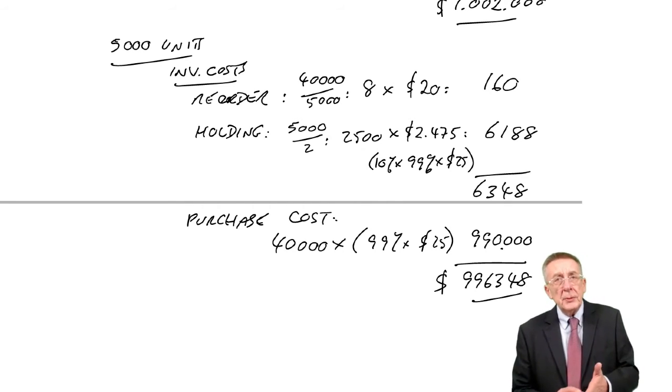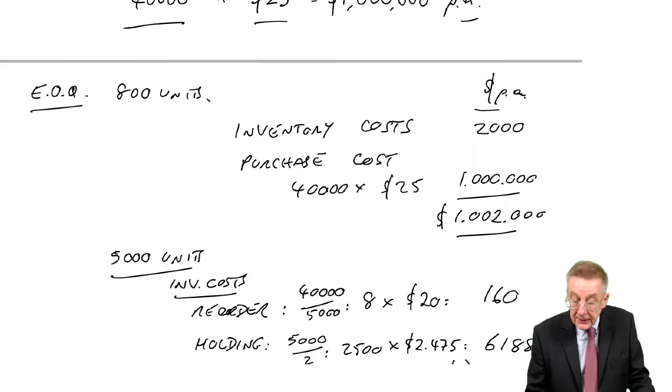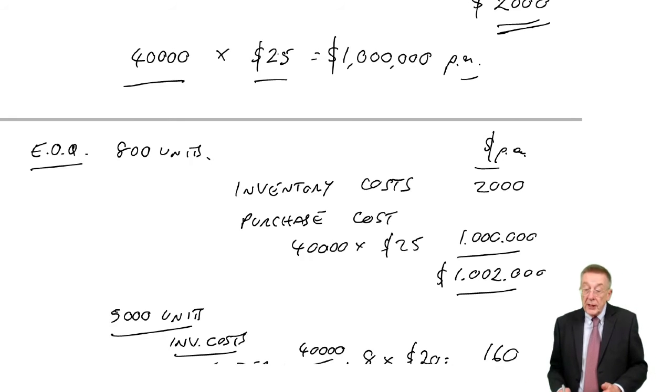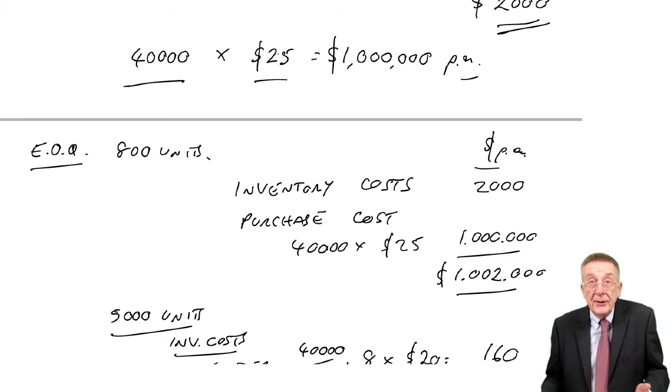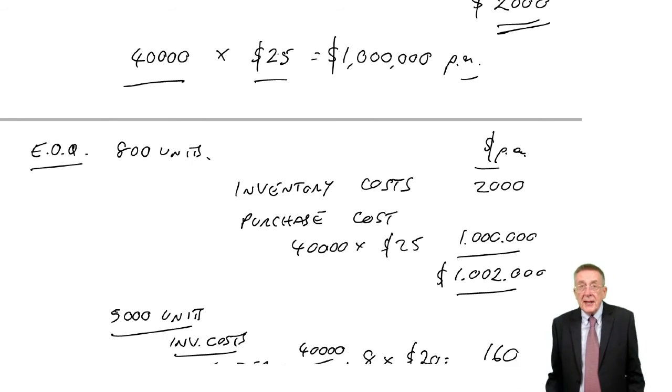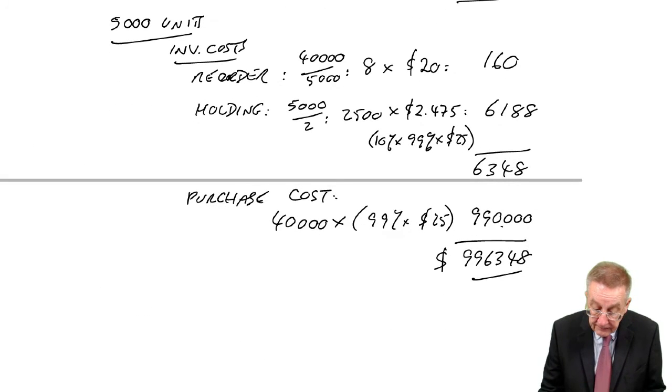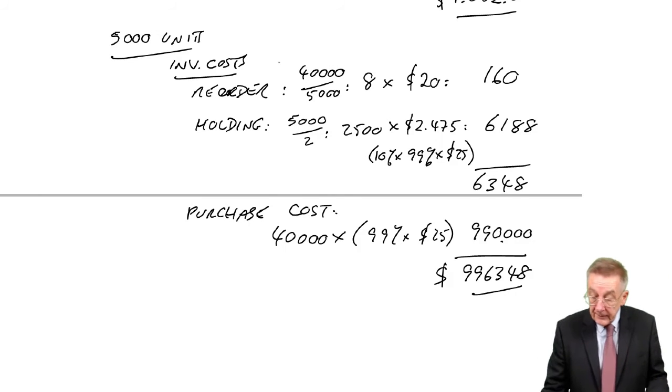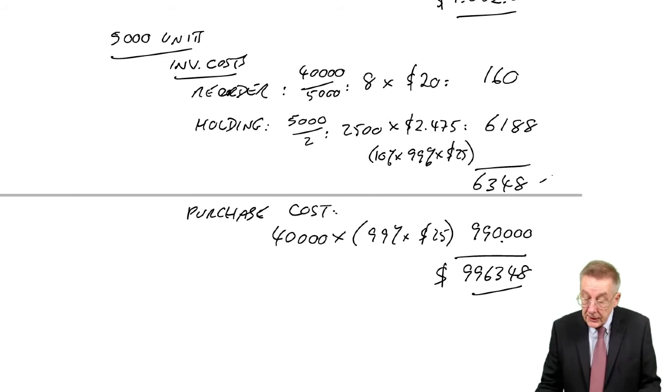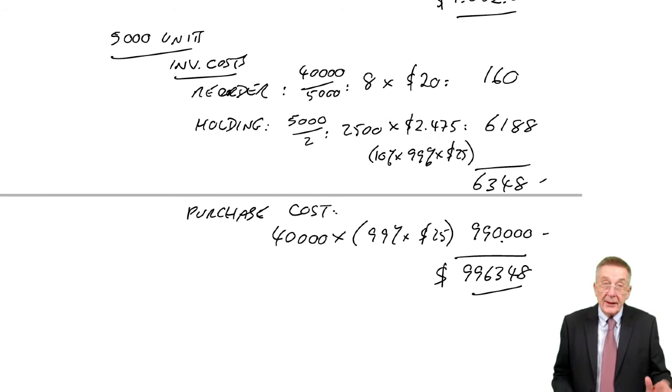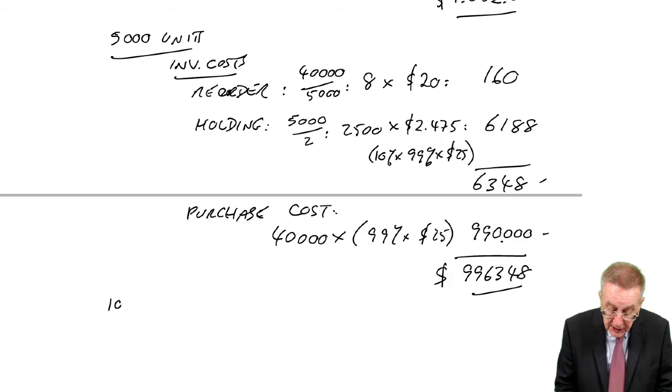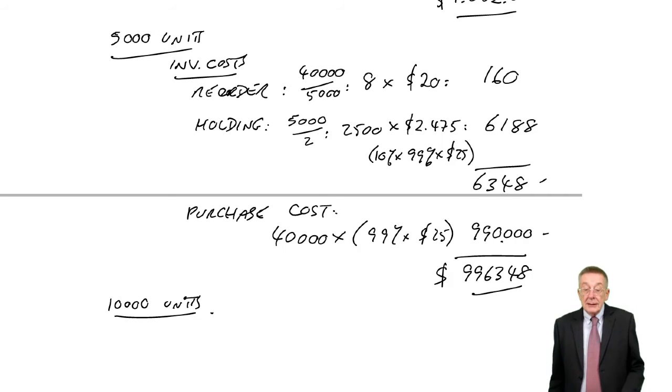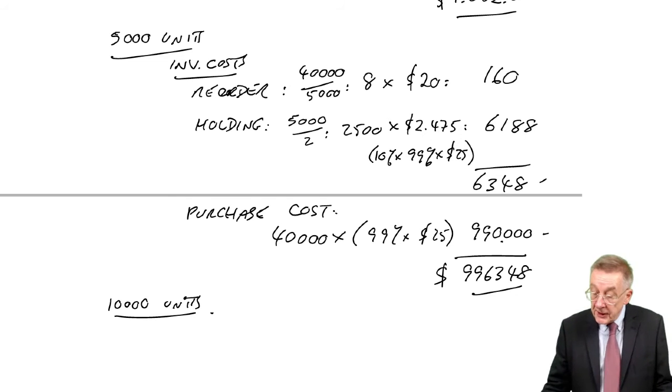Why don't we try other levels? 4,000 would be no point. At 4,000, inventory costs are bound to be higher than at the EOQ, and at 4,000 there's no discounts, so no point. What about 6,000? No point because inventory costs will be higher than 5,000, and there's no extra discount. But there is one more level worth trying: 10,000. Because if we order 10,000 units, there's a bigger discount, so the purchase price will be lower.